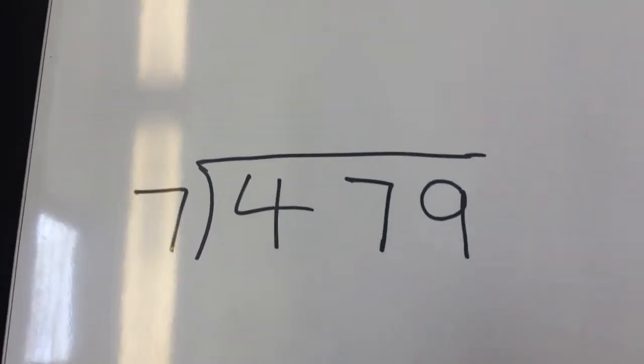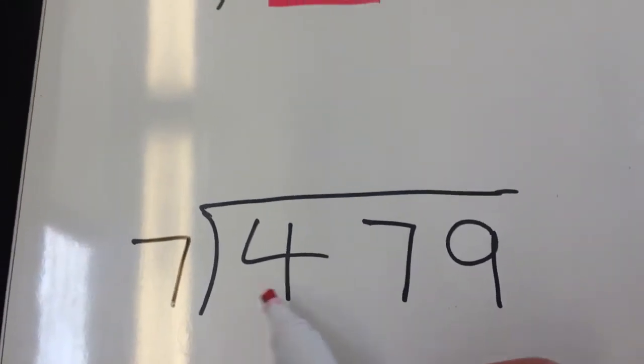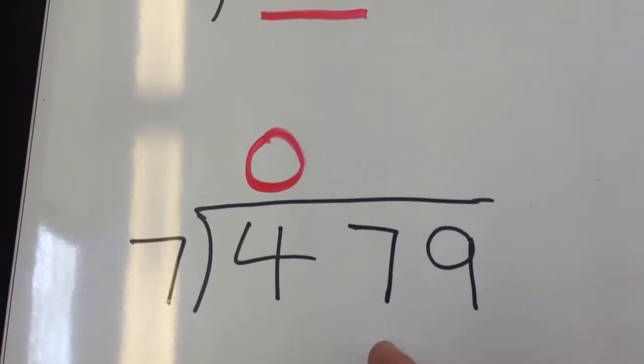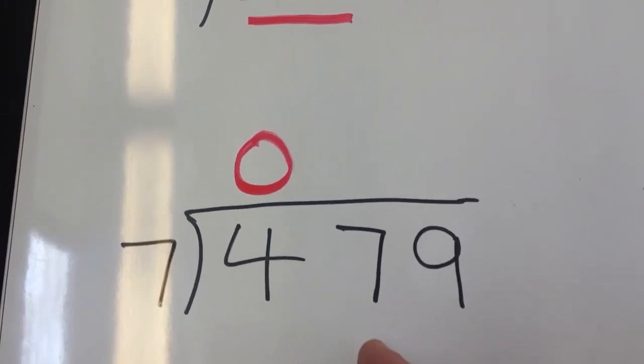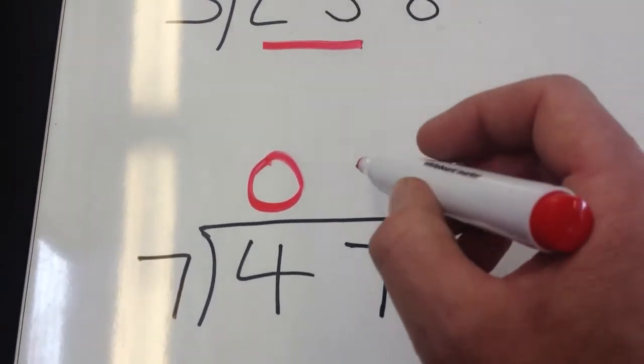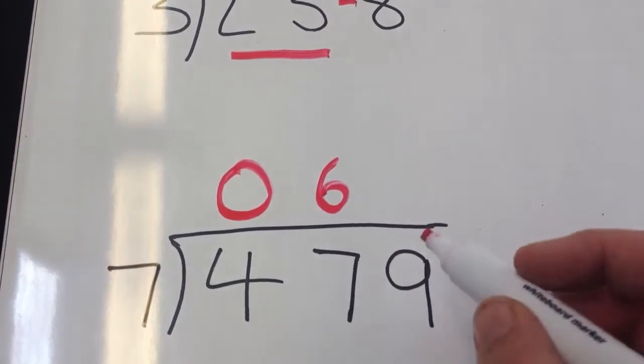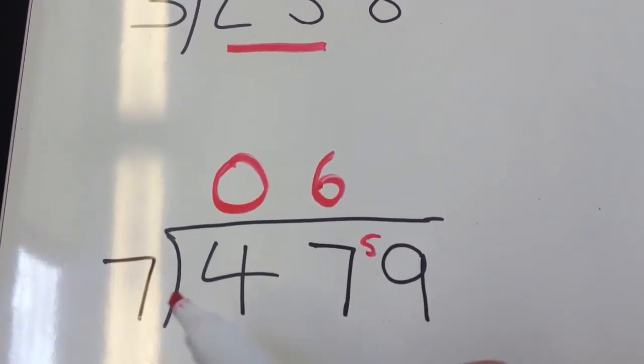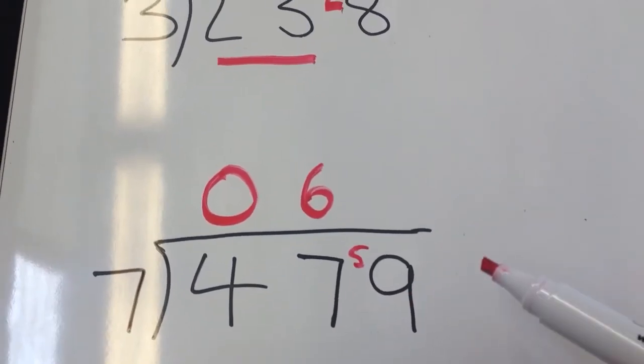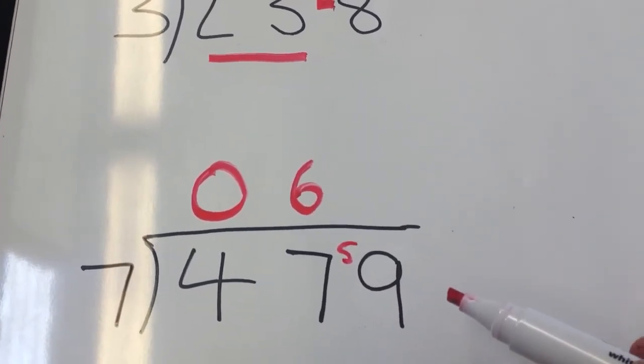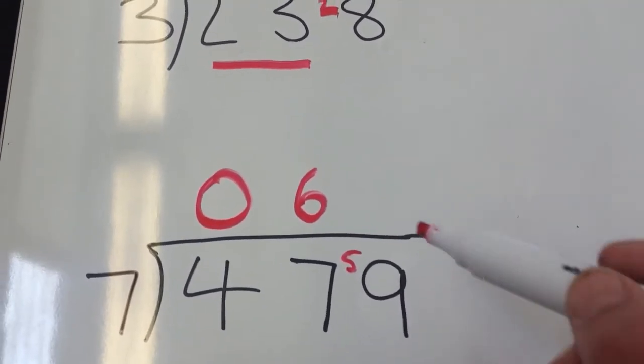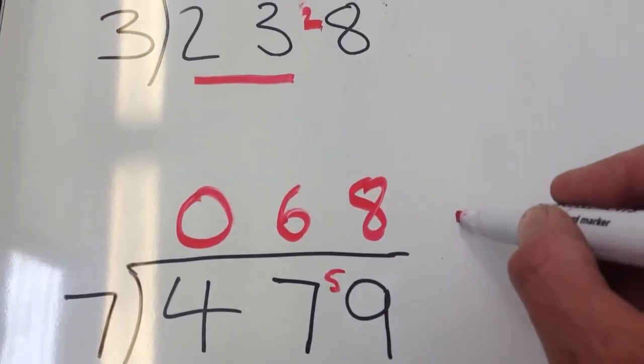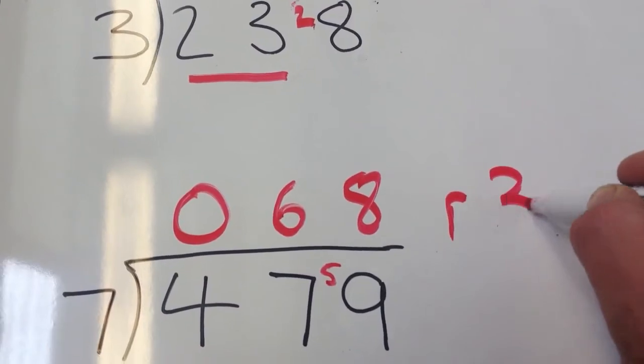Now let's go to the next example. 7 into 4, can't do. 7 into 47: 7 sixes are 42, so I've got 5 left over. Now 7s into 59. I know from my basic facts that 7 eights are 56, so I've got 3 left over. That's 68 remainder 3.